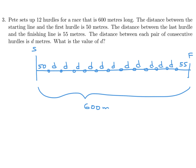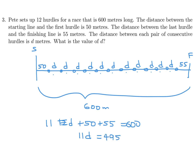That makes the equation 12d plus 50 plus 55 equals 600. Wait — I don't think it's 12d. Counting the gaps: 1, 2, 3, 4, 5, 6, 7, 8, 9, 10, 11 — it's 11d. So 11d equals 600 minus 105, which is 495, and therefore d equals 45. Make sure you get this right and don't make the mistake I was about to make.